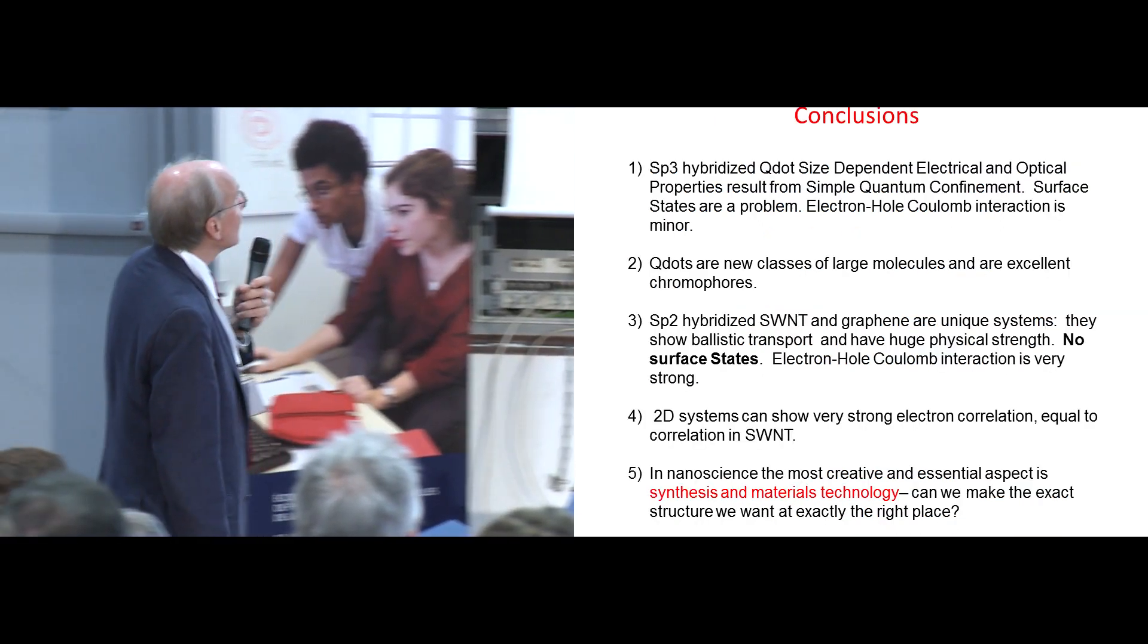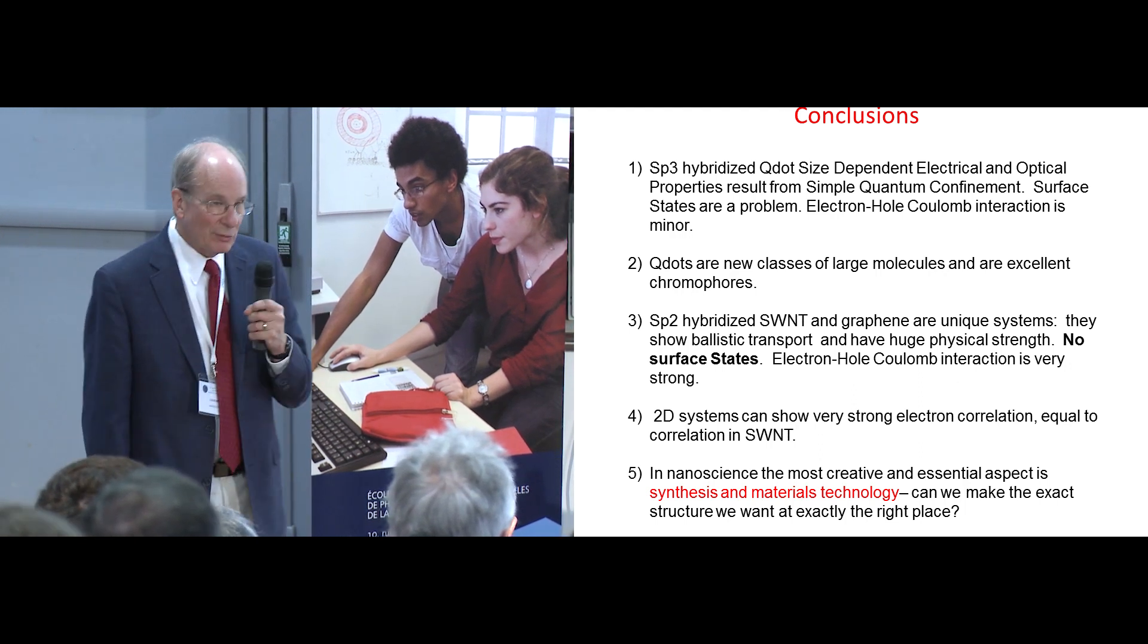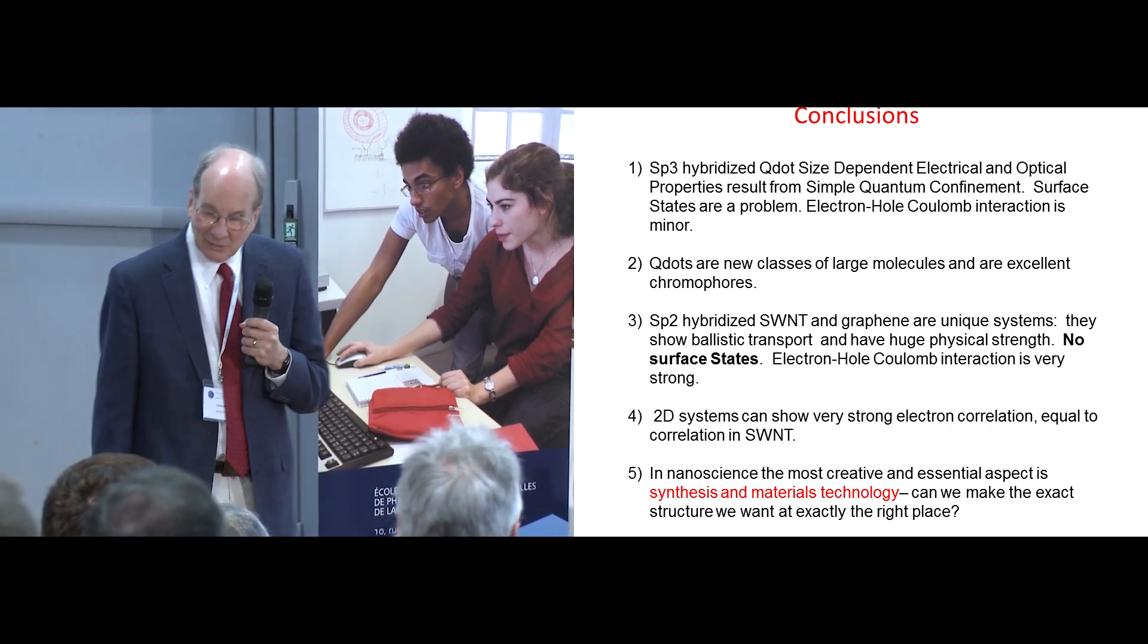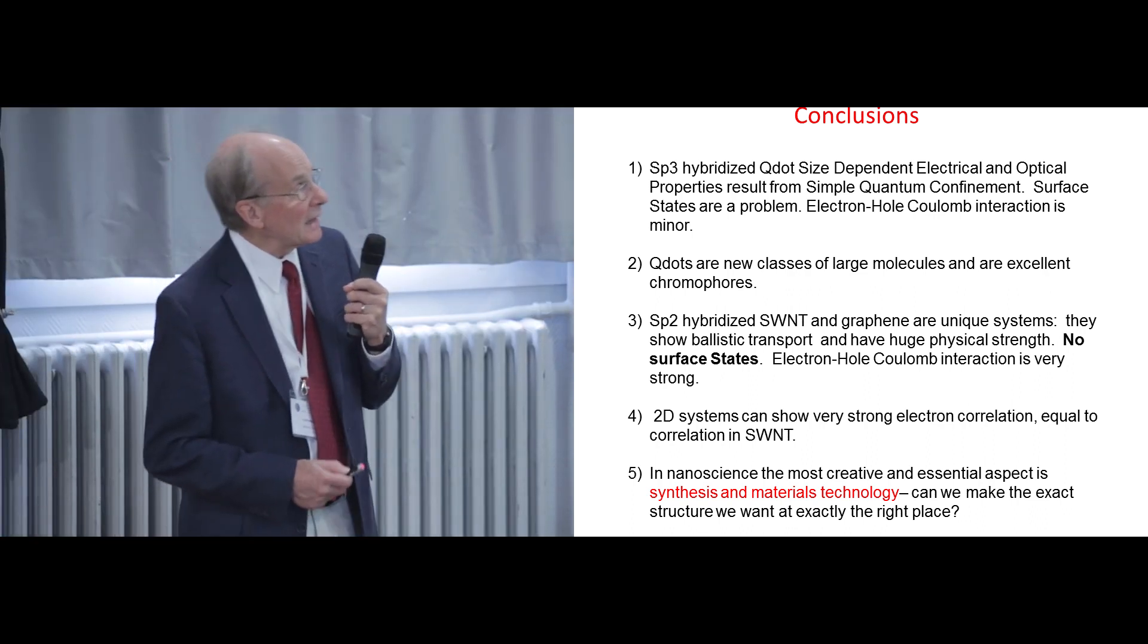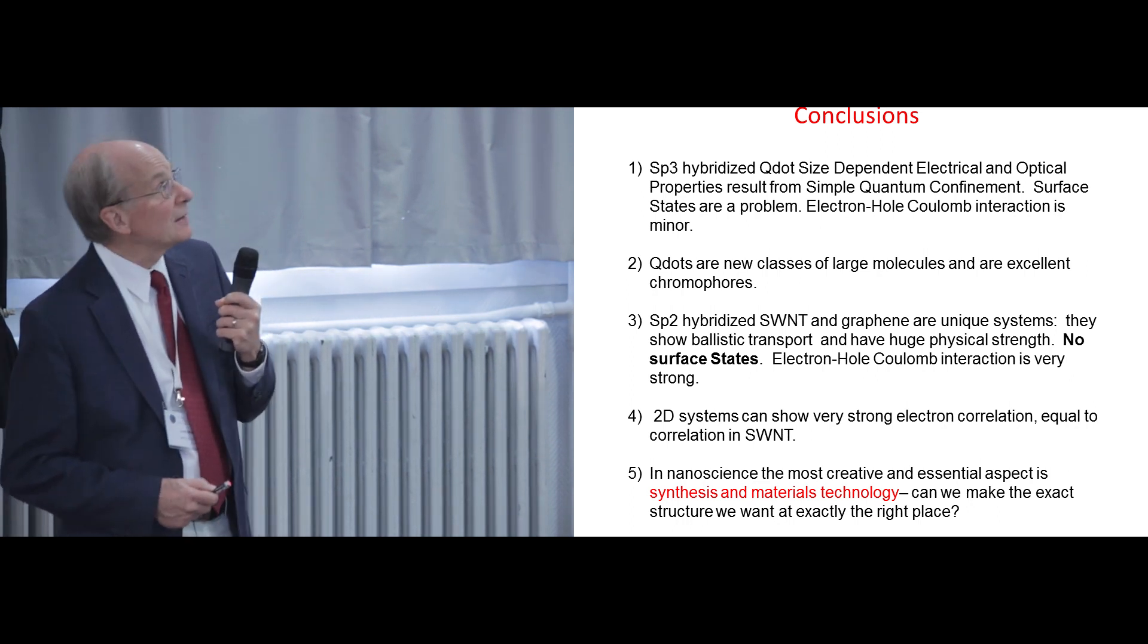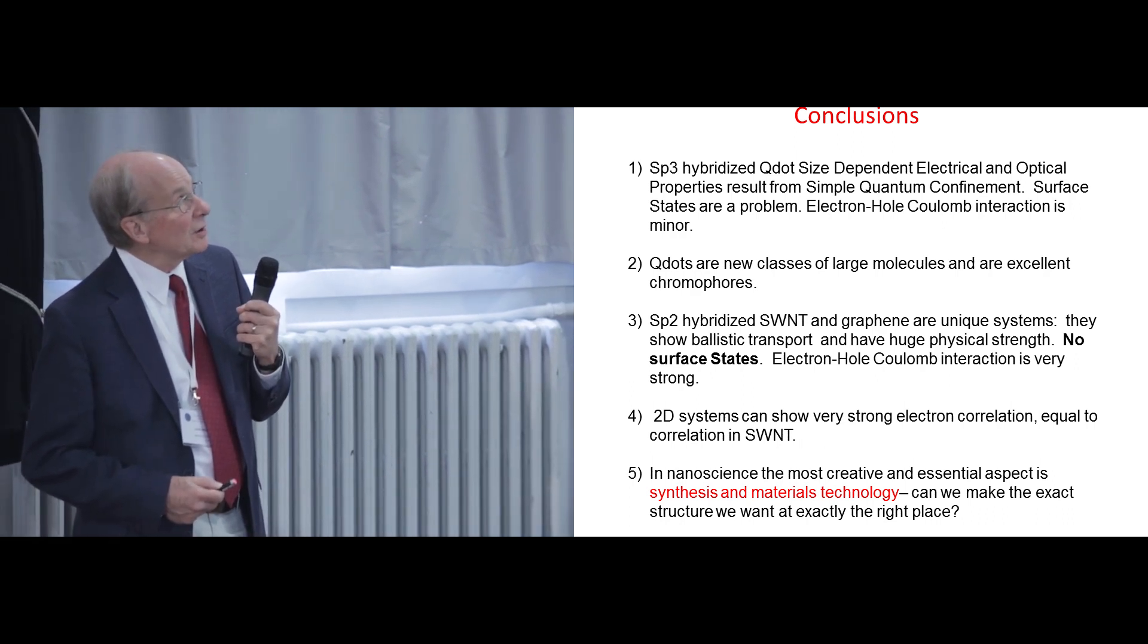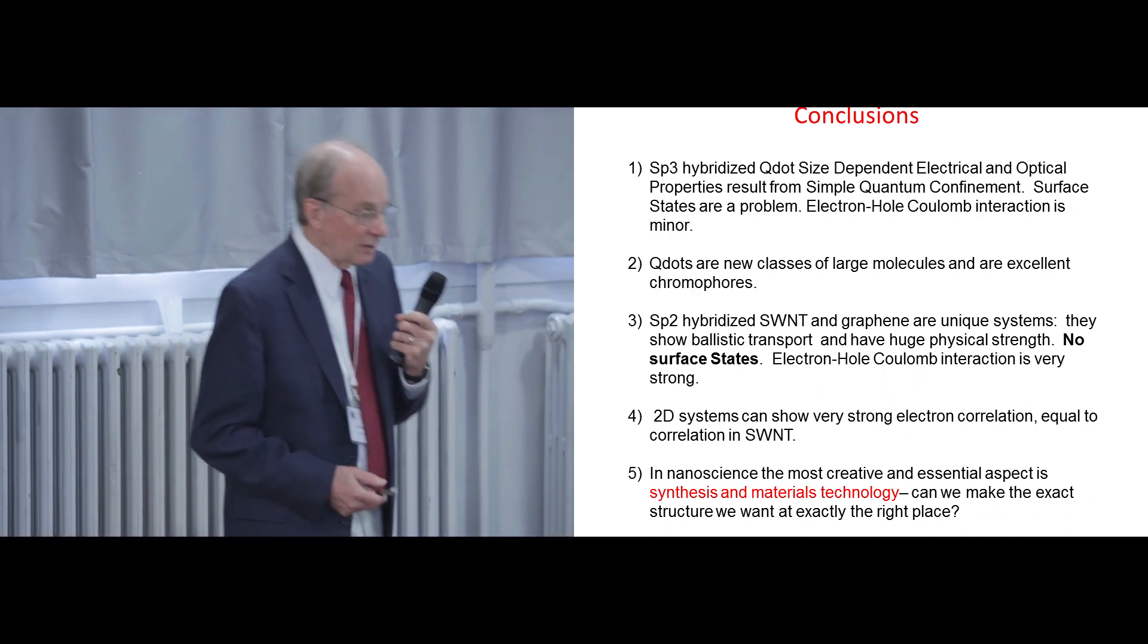So this morning, I have tried to tell you a little bit about my imperfect memory of what we were doing in the 1980s and how we stumbled from one thing to the next in the development of this methodology for working with quantum dots. And I've also tried to tell you about these very strong electron correlations that exist in these other systems. SP3 hybridized quantum dots, their properties result from simple quantum confinement, the individual quantum confinement of the electron and the hole. Surface states are a big problem. And the electron hole-Coulomb interaction is relatively minor.